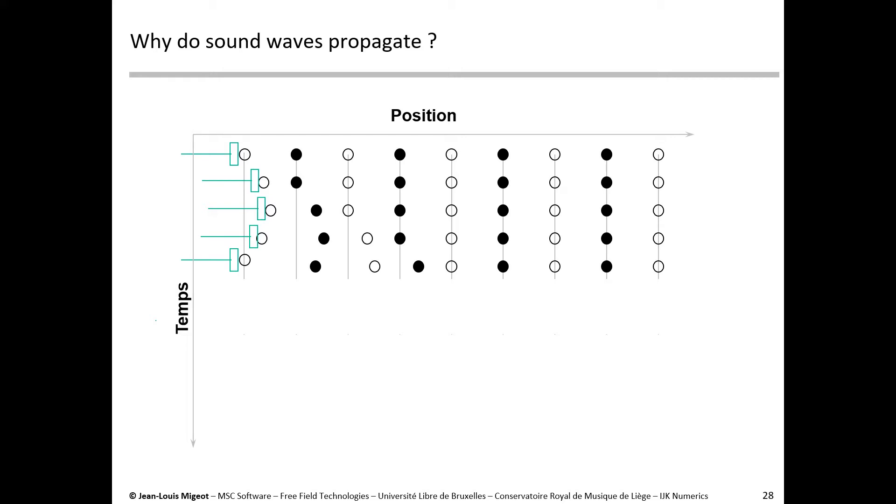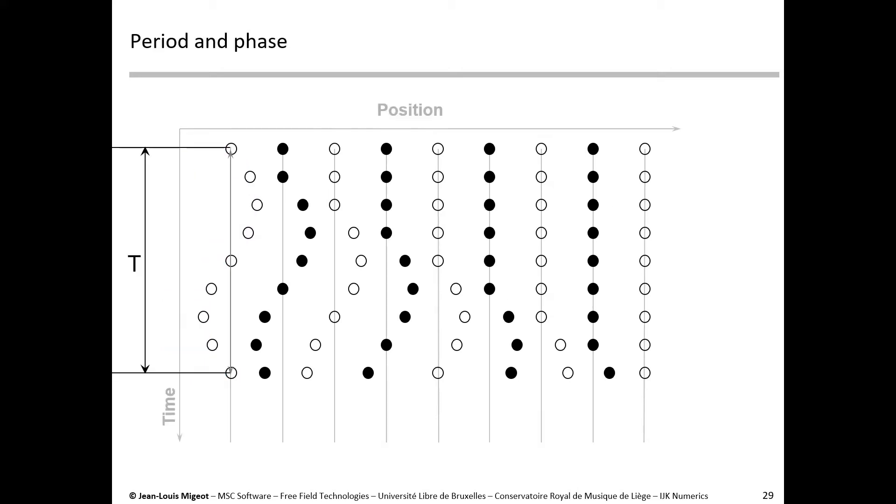So I will not comment every step, but you see basically that while the piston and the first mass is following a sine trajectory, a sine movement, the other molecules further down the duct also follow the same sine movement, but each time with some kind of delay.